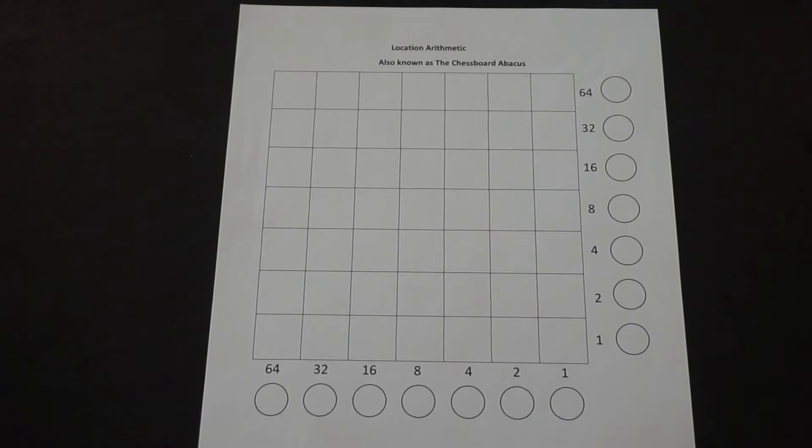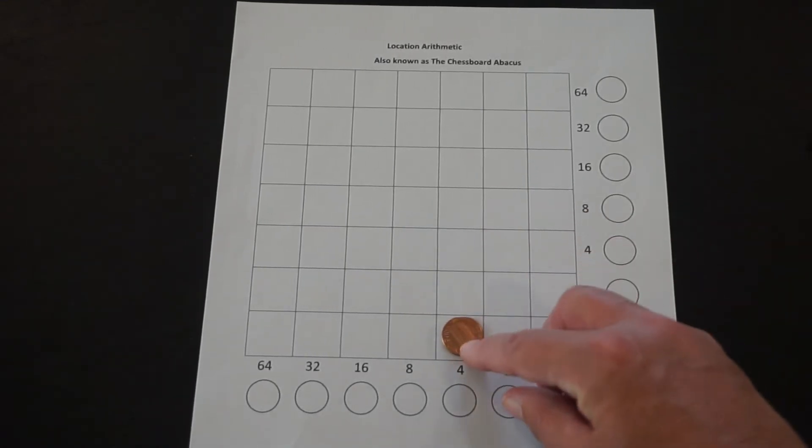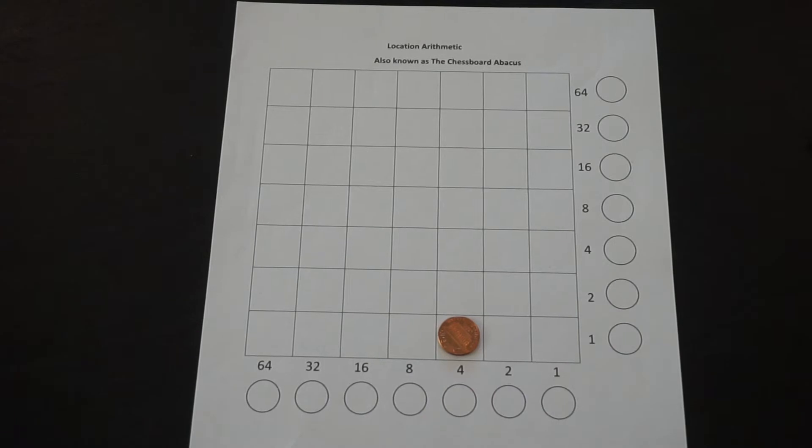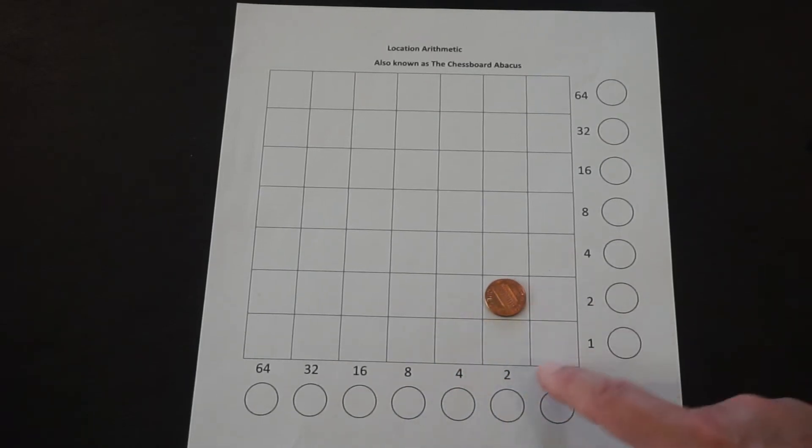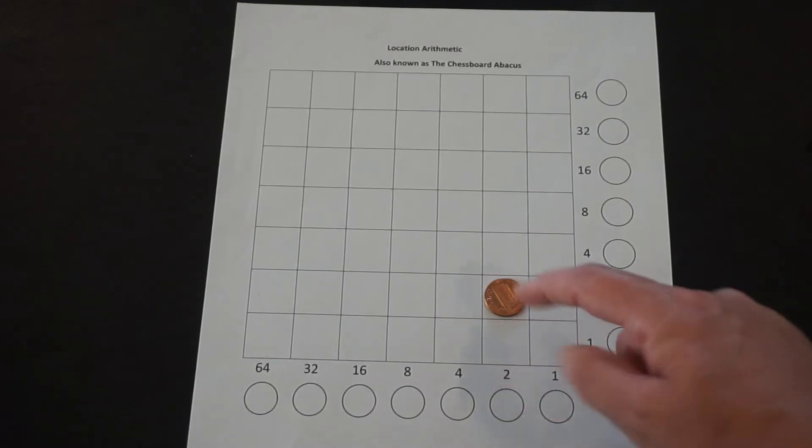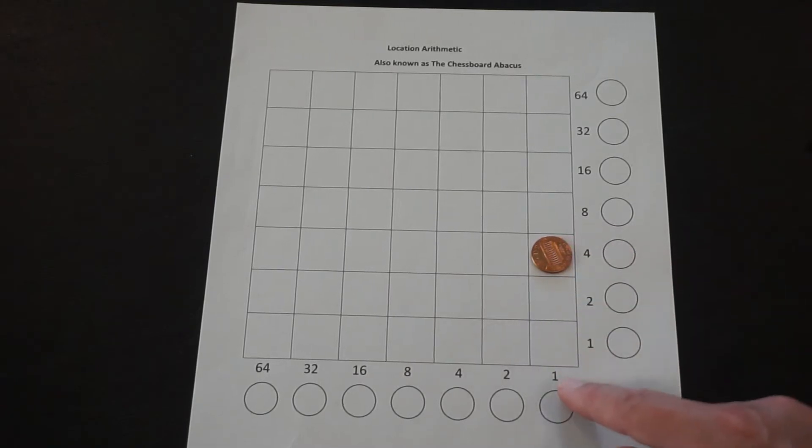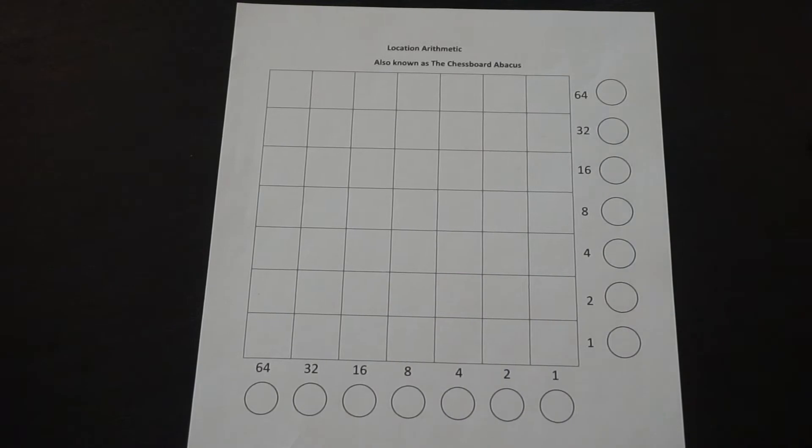So one of the things to know about this board is that if you move a marker diagonally from lower left to upper right, you maintain the same value. This is a 4—it's one group of 4—but if I move it diagonally in this way it's still a 4 because it's 2 times 2, 2 groups of 2. Move again, it's still 4 because now it's 4 groups of 1. So moving along a diagonal like this, no matter where you are, maintains the value.